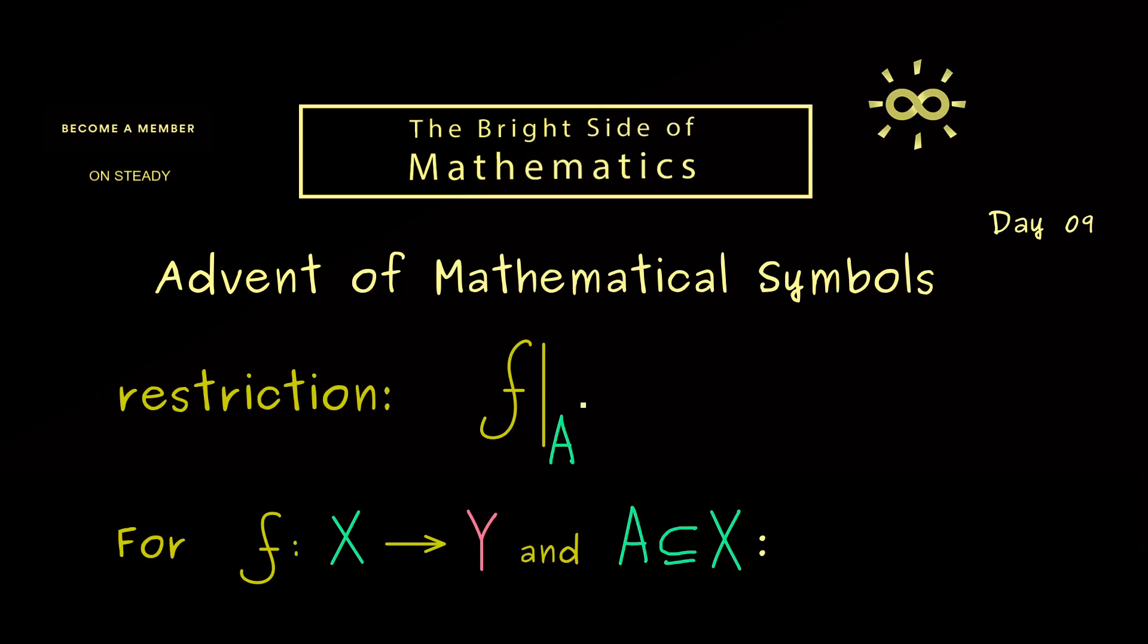This means now that this f restricted to A should be a map that is only defined on the set A. So the domain is A, but we still map into Y.